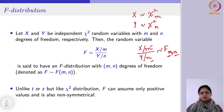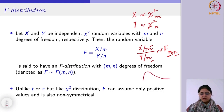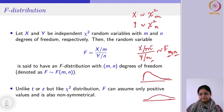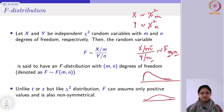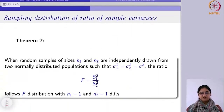The first degree of freedom comes from the numerator and the second from the denominator. Since F is based on chi-square distributions, it takes values from 0 to infinity. Unlike t or z which are more symmetrical, chi-square and F distributions are skewed. We will make use of this F-distribution in finding the next result.